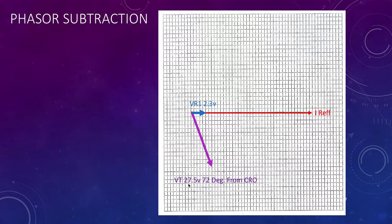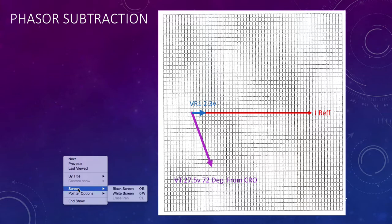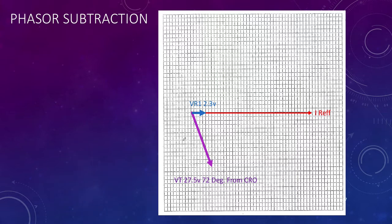27.5 from the CRO at 72 degrees, so we'll just draw that in. So that's our 72 degrees. You'll notice from the last time we did this the voltage led the current. Now the voltage lags the current, so the 72 degrees is down in this direction. Of course the voltage is lagging the current. Remember our phasor diagram is always rotating anti-clockwise.